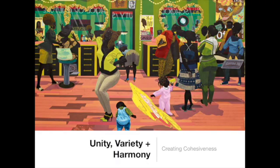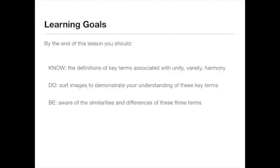Welcome back. Today we're going to be talking about three terms that relate to the overall cohesiveness of an artwork: unity, variety, and harmony. When we're done with this video series, you should understand the definitions of these key terms, be able to sort images to demonstrate your understanding, and be aware of some of the similarities and differences between these concepts, because they're distinct but also interconnected.